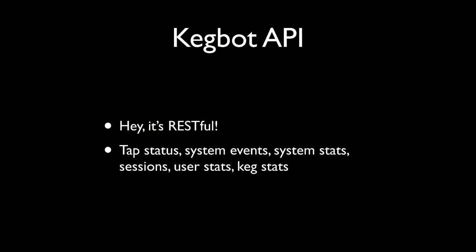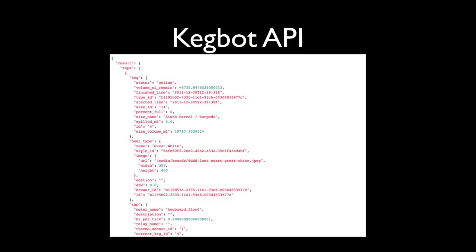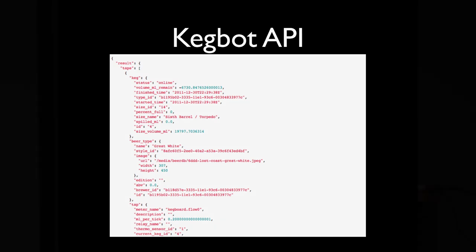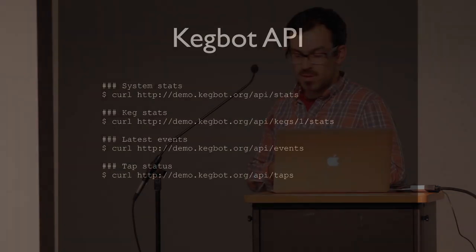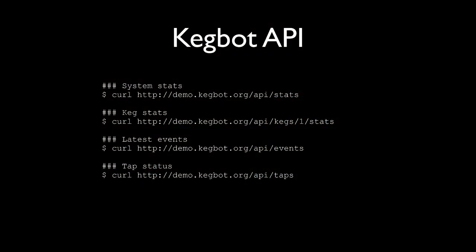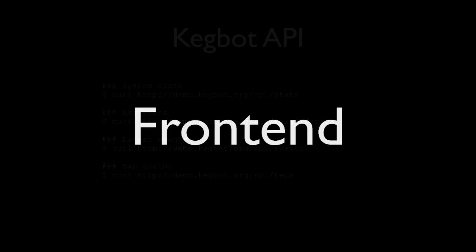There's a RESTful API — you can see the view of basically what's on tap, with a database of beer information, the current volume remaining, recent history, and examples you can run from your command line.